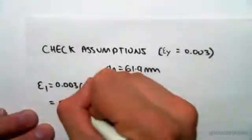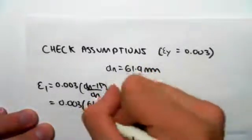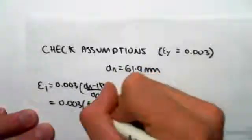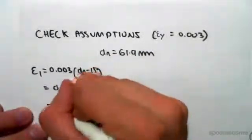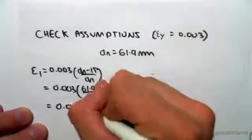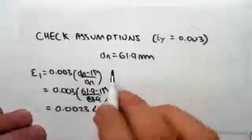we would have 0.003, 61.9 minus 15 on 61.9. If you were to solve for this, you would find that the strain would be 0.0023, which is less than our yield strain and therefore it hasn't yielded.